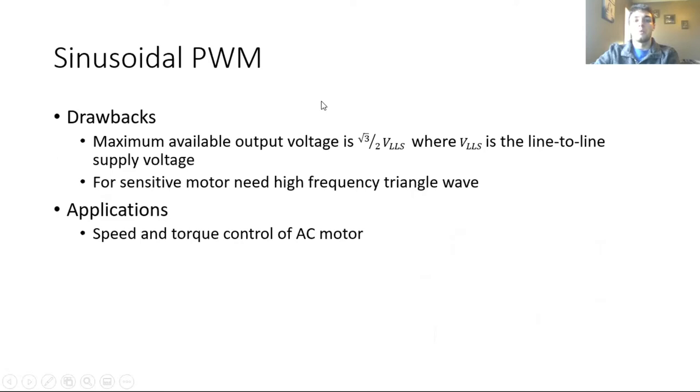To finish up sinusoidal pulse width modulation, some common drawbacks are the maximum voltage available is the square root of 3 over 2 of the supplied line-to-line voltage. So if you supply 400 volts line-to-line you can't get 400 volts line-to-line out. You're going to get a maximum of 0.866 times 400, about 360 to 380 volts line-to-line out, and that's due to the efficiency of the rectifier circuit and then again transforming that DC back into AC and there are also some losses when we switch the FETs on and off.